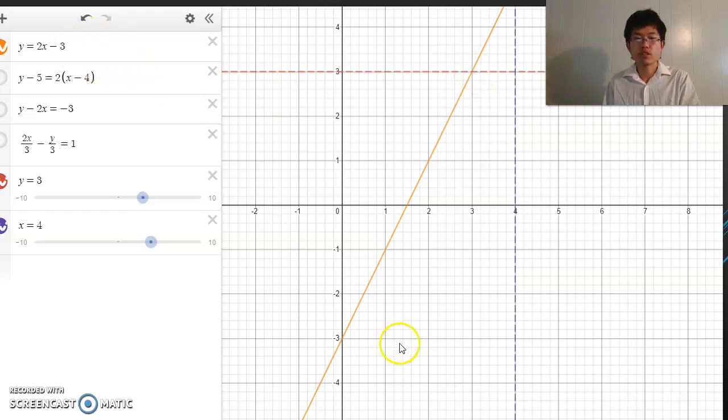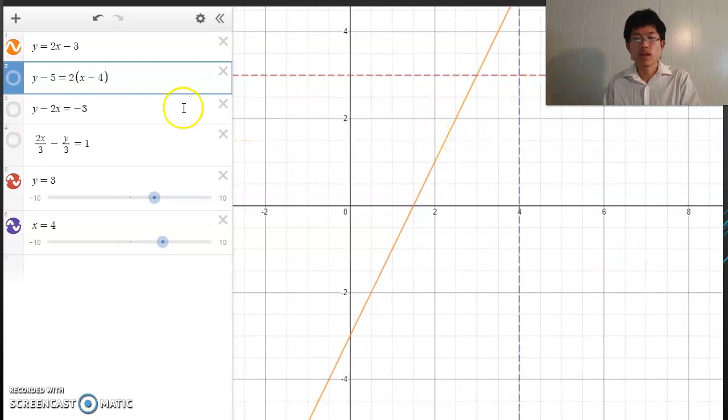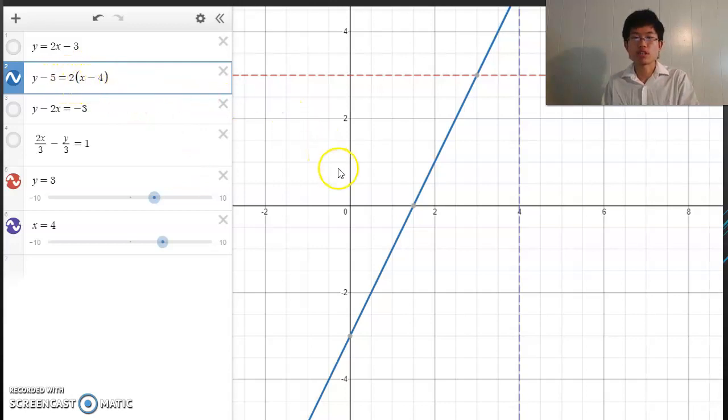Next one—that was the slope-intercept form, and this one will be the point-slope form. Notice that it's the same line, but it's written a different way. It's point-slope form: y - 5 = 2(x - 4). 5 right here and 4 is the point.